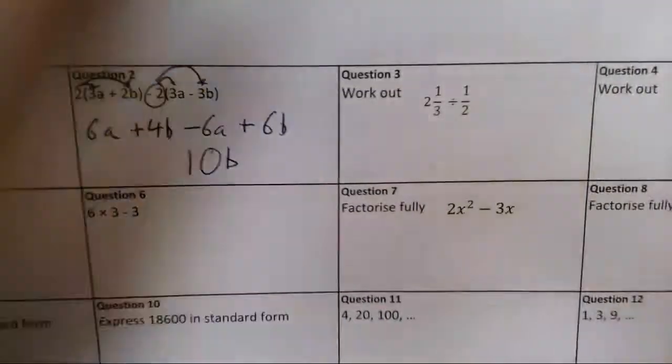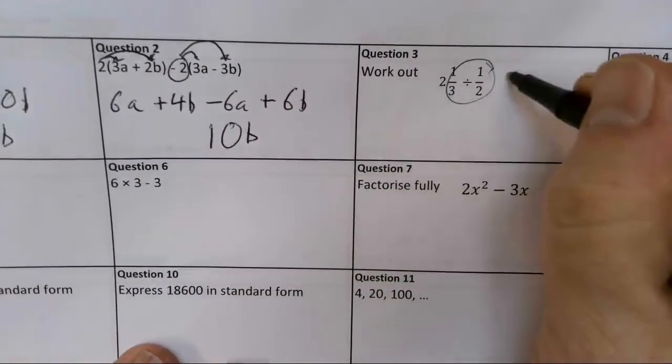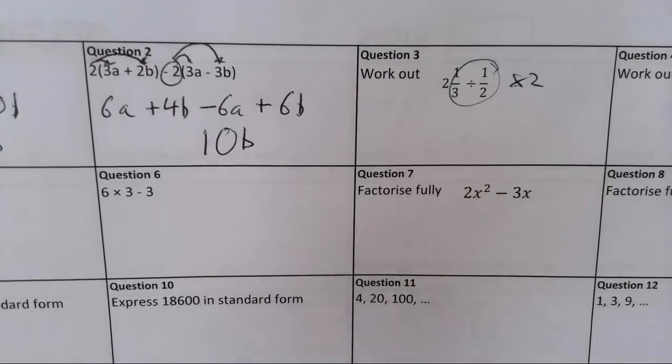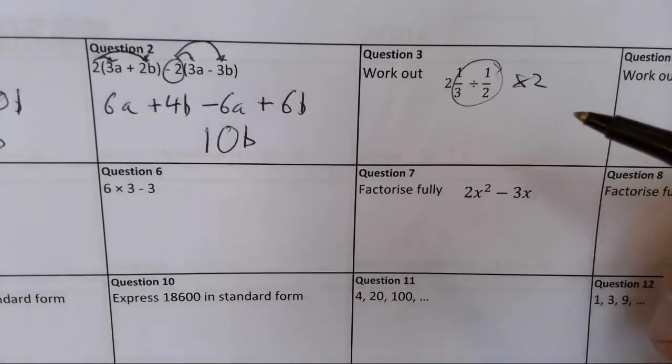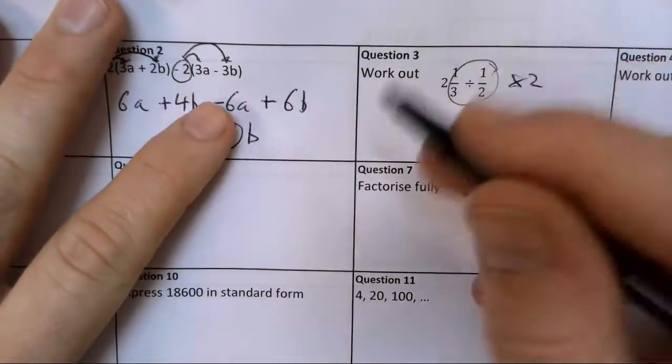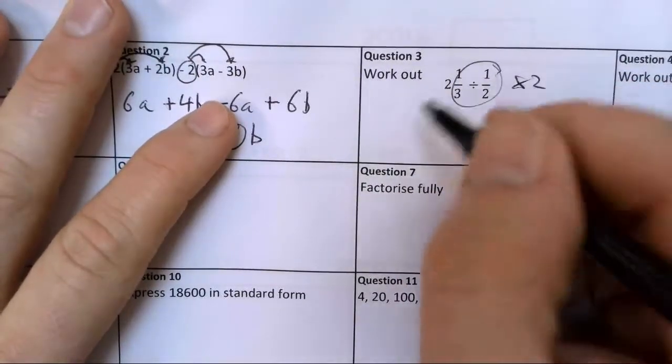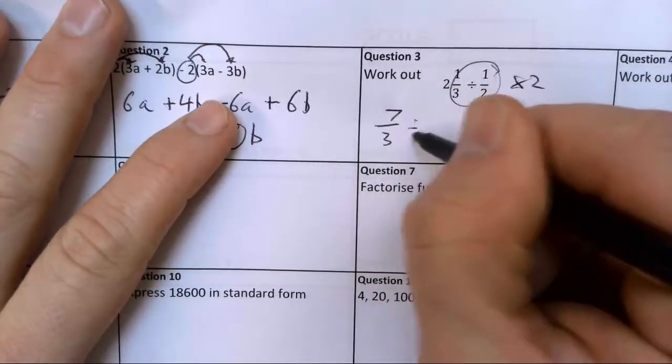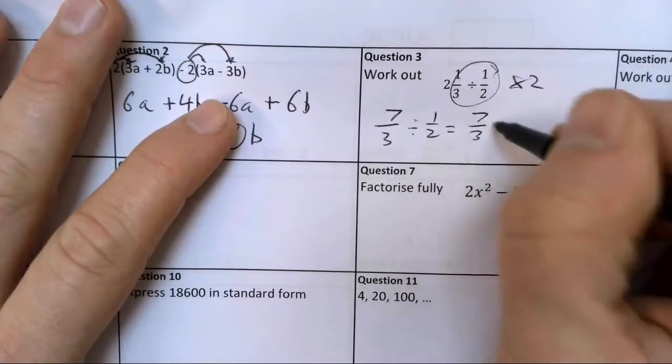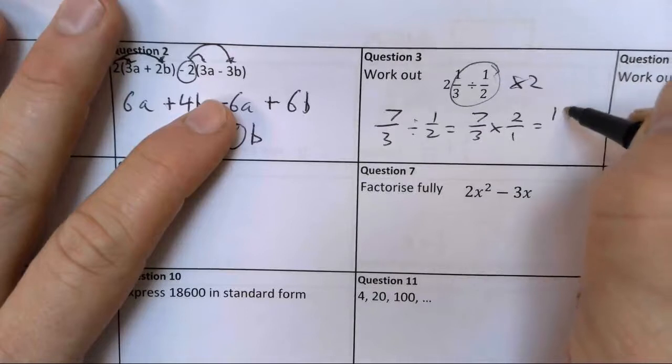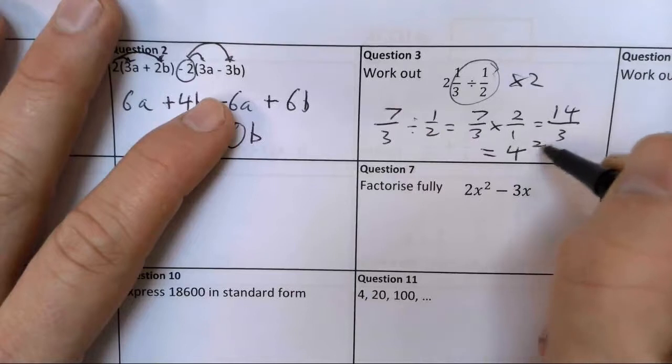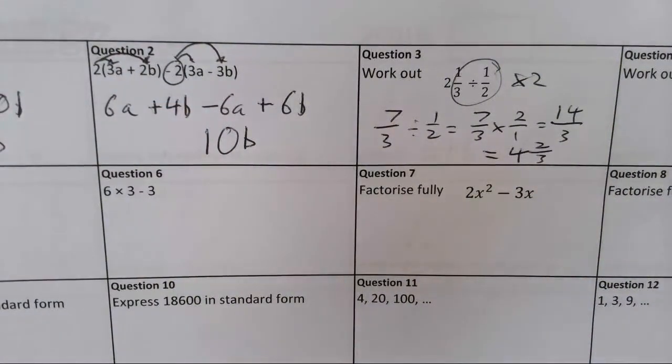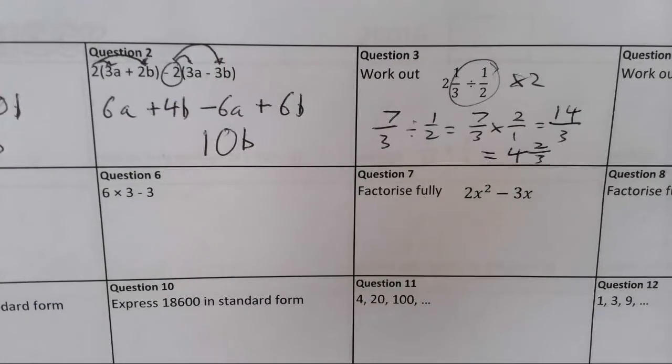Question three. We've got a fraction. Now we should remember, if we're dividing by a half, it's the same as timesing by 2. So that would save us quite a lot of work. And we go straight to 2 and 1 third times 2, which gives me 4 and 2 thirds. If you want to show a full method for that, then we've got 7 thirds divided by a half, which is the same as 7 thirds times by 2 over 1, which is 14 over 3, which is then 4 wholes and 2 thirds.